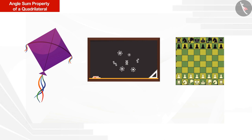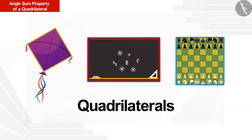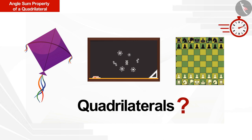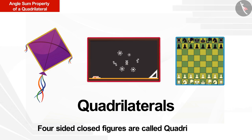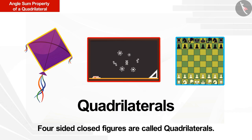Here are some figures that you must recognize. These are all quadrilaterals. The question is: what is the meaning of quadrilateral and what is it? Figures that have four sides are called quadrilaterals. All these shapes have four sides.